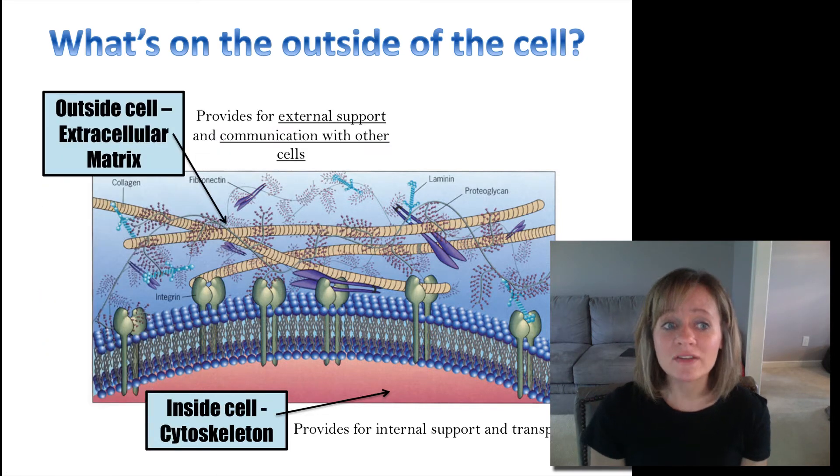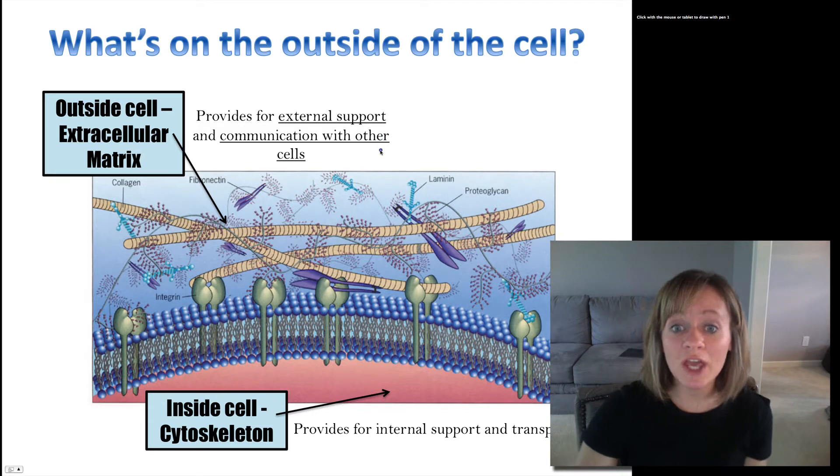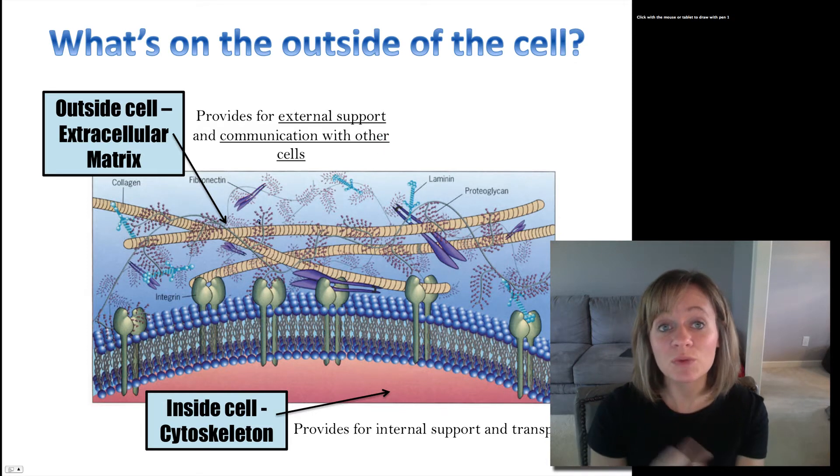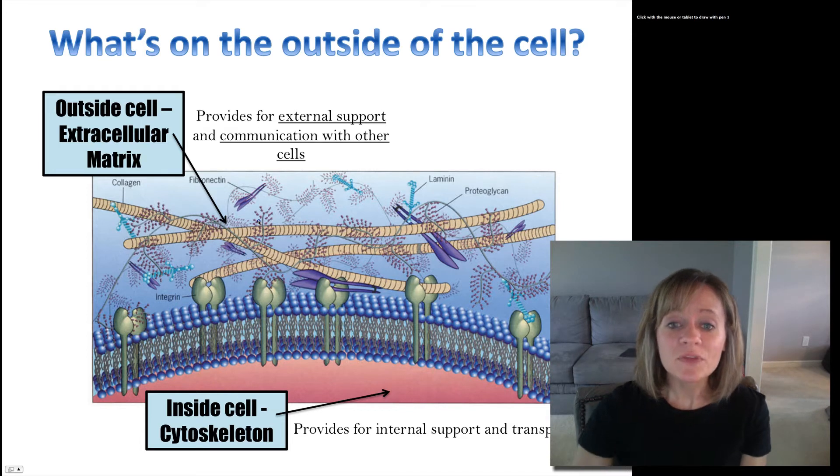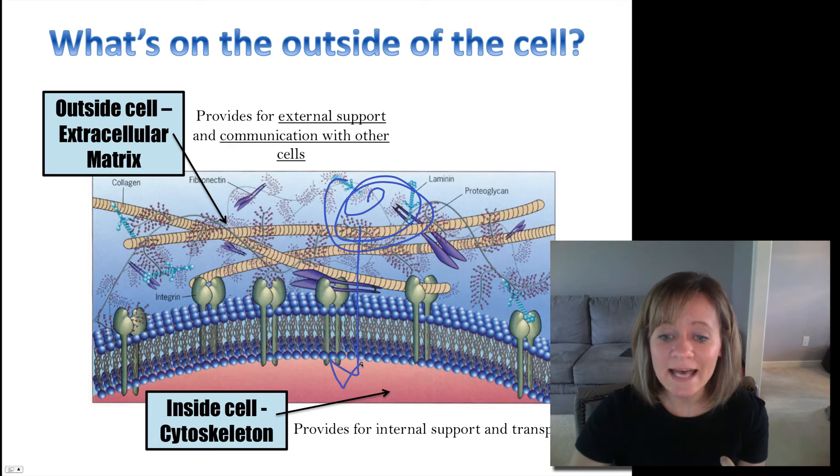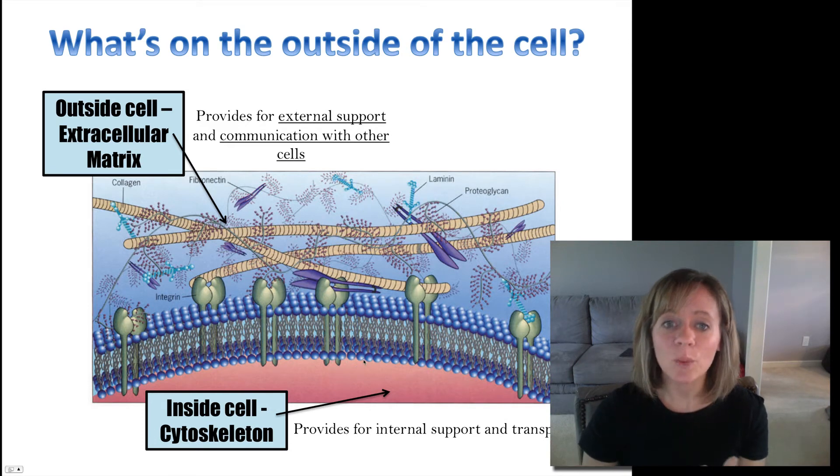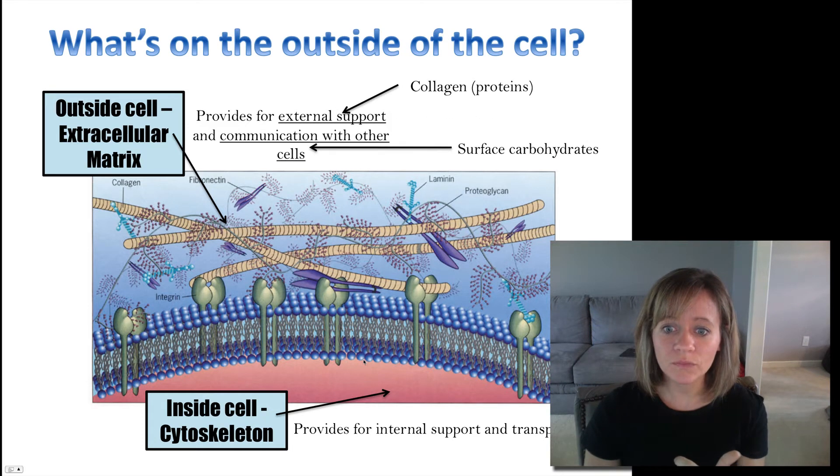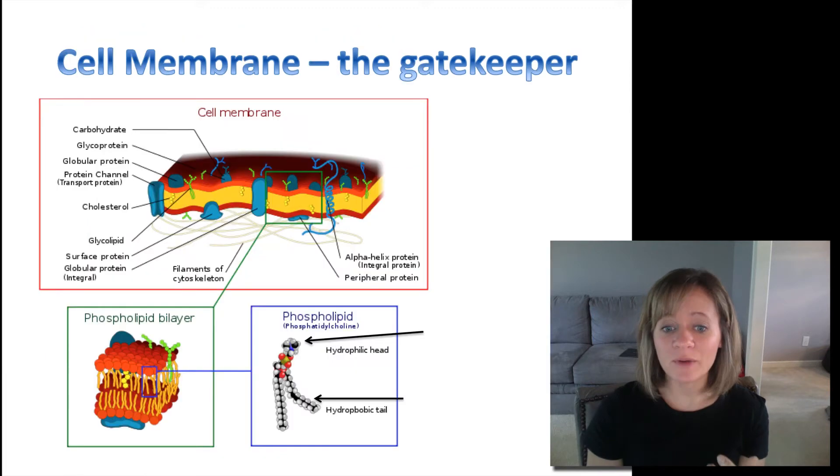Outside of the cell we have something called the extracellular matrix and this provides for external support and it also provides a mechanism for cells to communicate with one another by sort of just touching with the extracellular matrix. So we have to think about how do nutrients from out here get inside the cell. Collagen provides external support and surface carbohydrates provide for communication. And that's the cell membrane.